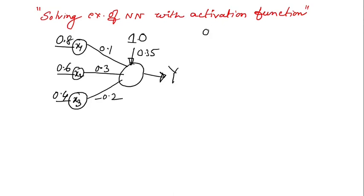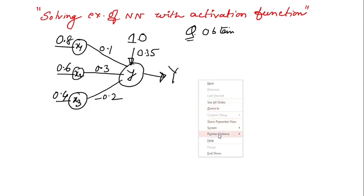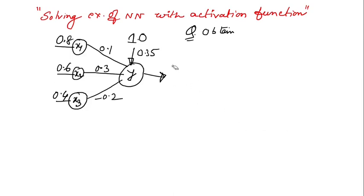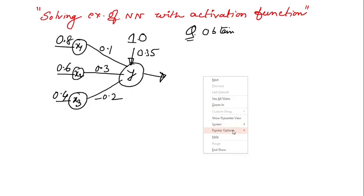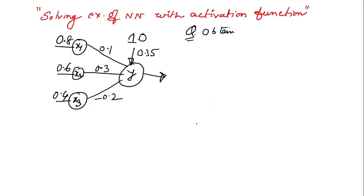Now, if I ask you that obtain, this is the question, obtain the output of the neuron Y. So this is the output, let us say this is Y.